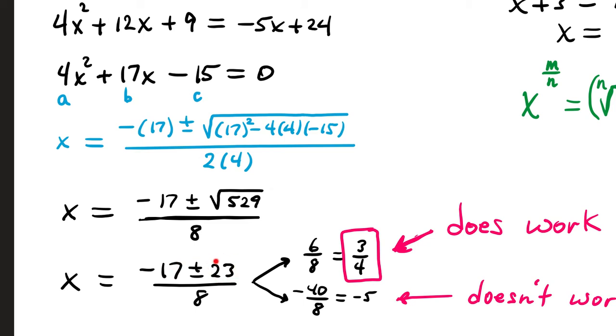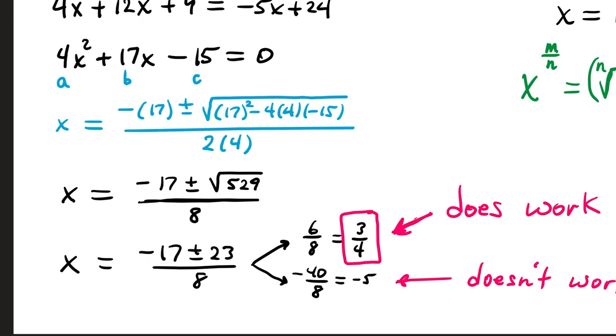Using the plus sign, negative 17 plus 23 is 6, over 8 reduces to 3 fourths. Using the minus sign, 17 minus 23, that's negative 40, divided by 8 is negative 5.